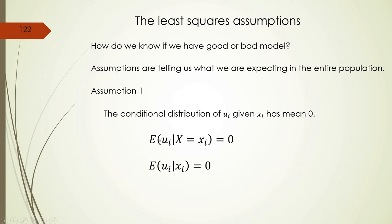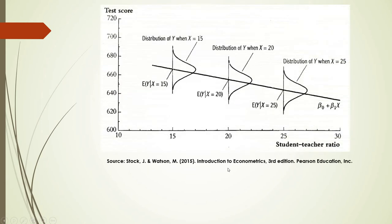Graphically, it looks like this. In our example of student-teacher ratio and test scores, for a student-teacher ratio of 15 students per one teacher, we have a distribution of the residuals across several districts. We have different values for the same class size — sometimes above our linear model and sometimes below it. Residuals are differences between the original data and the linear model. On average, we expect them to have a normal distribution with an expected value of zero.